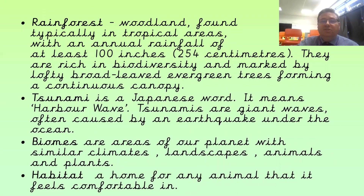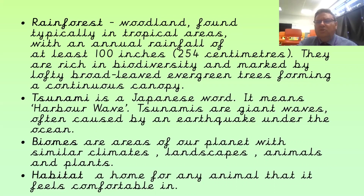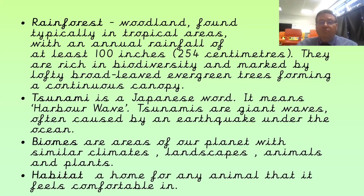Tropical rainforests are woodland typically found in tropical areas with an annual rainfall of at least 100 inches or 254 centimetres — that's over two and a half metres — so an awful lot of rain. They are really rich in biodiversity, with lots of different kinds of animals, plants, insects, and birds. They are marked by very tall, skyscraper-tall, broadleaf evergreen trees which form a continuous canopy, and we've talked about the different layers and canopies in a rainforest.